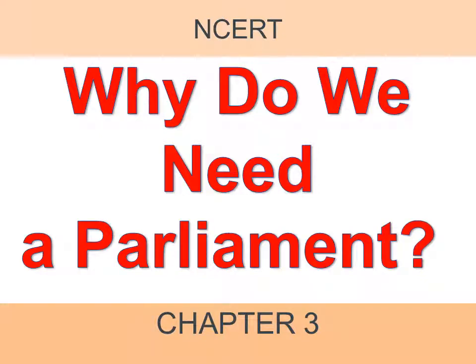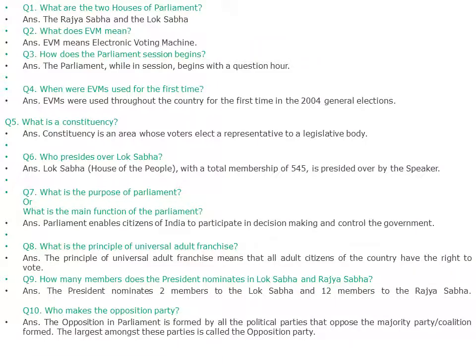Why do we need a parliament? What are the two houses of parliament? The two houses are the Rajya Sabha and the Lok Sabha. What does EVM mean? EVM means Electronic Voting Machine. How does the parliament session begin? The parliament, while in session, begins with a Question Hour. When were EVMs used for the first time? EVMs were used throughout the country for the first time in the 2004 general election. What is a constituency? A constituency is an area whose voters elect a representative to a legislative body.